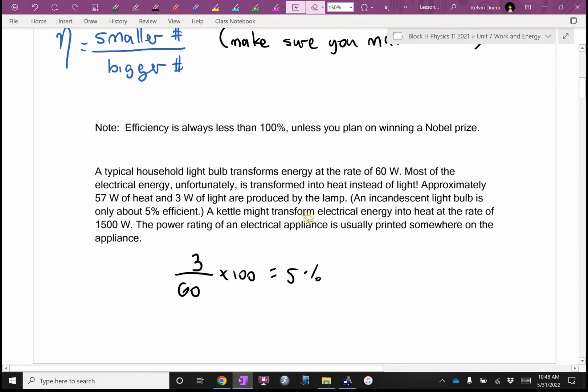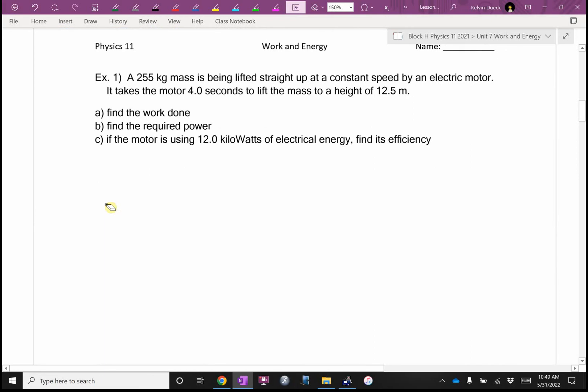A kettle, an electric kettle, might transform electrical energy into heat at a rate of 1,500 watts, 1,500 joules per second. It's giving off a lot of heat as well, so it's not very efficient. But we're always trying to build devices that are more efficient, that can do the same amount of power or the same amount of work with less input. Example 1. A 255-kilogram mass is being lifted. You know what? I would underline the word lifted. That's a trigger word in my mind. Straight up at a constant speed by an electric motor. It takes the motor 4 seconds to lift the mass to a height of 12.5 meters.